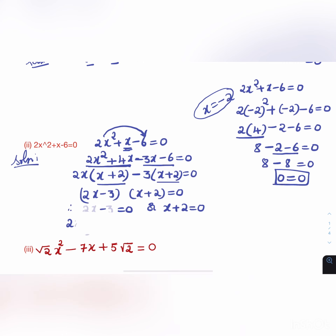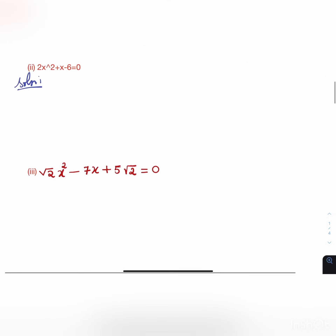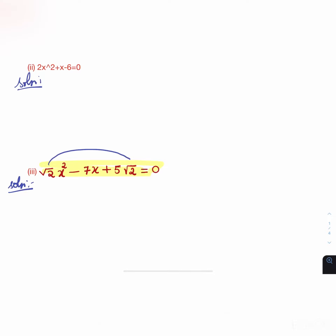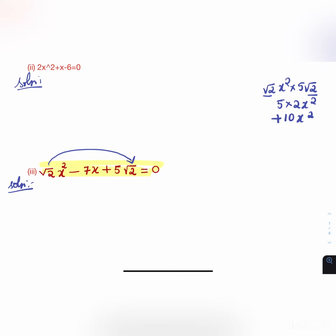The third question is a bit tricky. We have √2·x² - 7x + 5√2 = 0. If we multiply the first and last terms: √2·x² × 5√2 = 5 × 2 × x² = 10x². So we need factors of 10 that give us 7 when added.